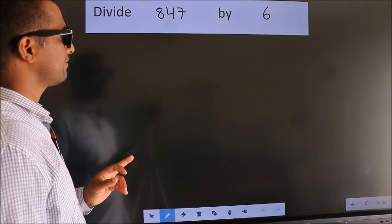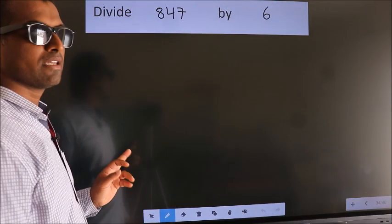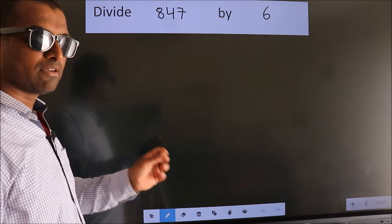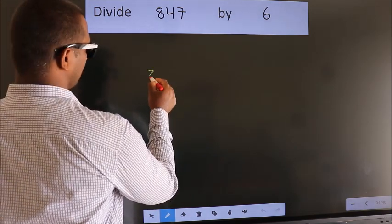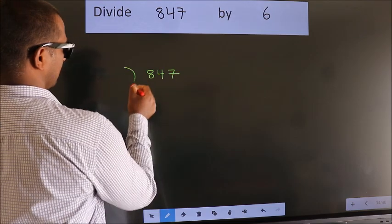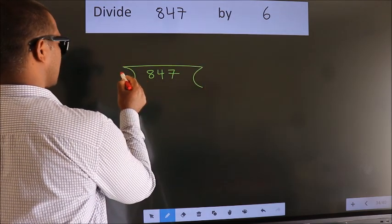Divide 847 by 6. To do this division, we should frame it in this way. 847 here, 6 here.